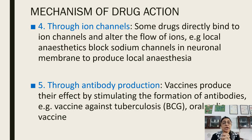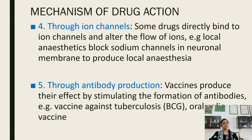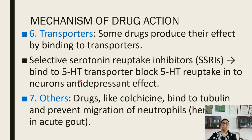Action through ion channels — some drugs directly bind to the ion channel and alter the flow of ions, like local anesthetics which block the sodium channel in the neuronal membrane and produce local anesthesia. Action through antibody production — vaccines produce antibodies against a particular antigen, such as the vaccine against tuberculosis or oral polio vaccine. Action through transporters — some drugs produce their effect by binding to transporters. For example, selective serotonin reuptake inhibitors bind with the 5-HT transporter and block 5-HT reuptake into the neuron, producing antidepressant effects.